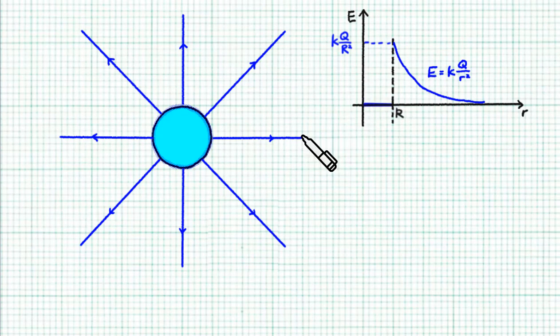So if you imagine pushing a positive test charge towards the charged sphere, then as you approach the sphere, you're going to experience a stronger and stronger electric repulsion because the field strength is getting stronger and stronger. But the moment you penetrate the sphere, the electric repulsion falls to zero because there's no field strength inside the sphere.